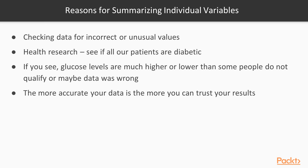Another reason why you would want to summarize individual variables is because you want to check your data to see if it is accurate. For example, we may be doing health research and we want to make sure that all of our patients are diabetic. If you see that the glucose levels are much higher or lower than what we're expecting for our population, then maybe some of those people don't qualify for that study, or maybe there was just an error in how that data was entered. So it's important to summarize your individual variables so that you can check the accuracy of your data.